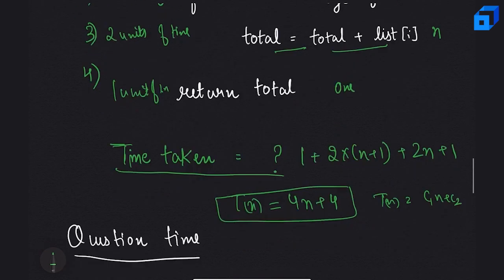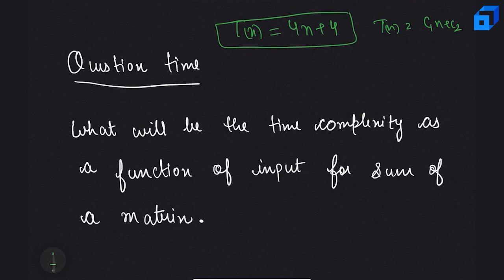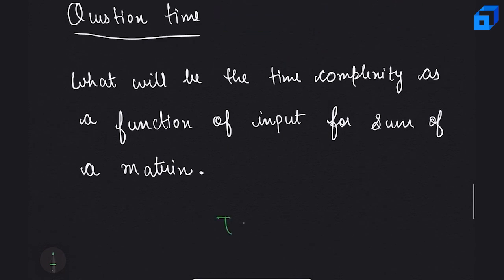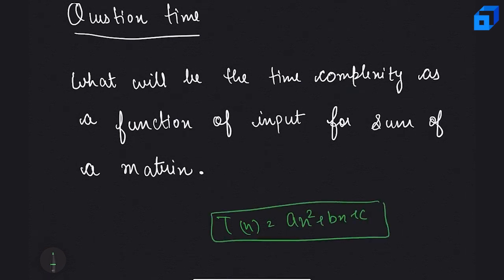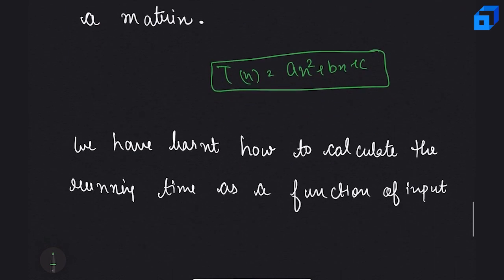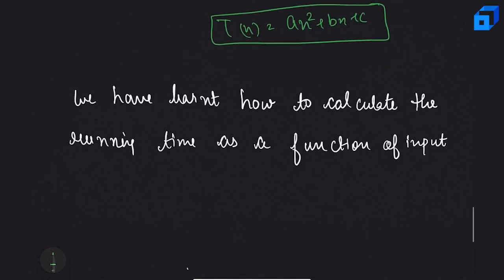For a question: what is the time complexity for the sum of a matrix? In the case of a matrix, we have n² elements, so to calculate the sum we need to iterate over each element. This means our running time is a quadratic function, and we can prove it based on our model machine.